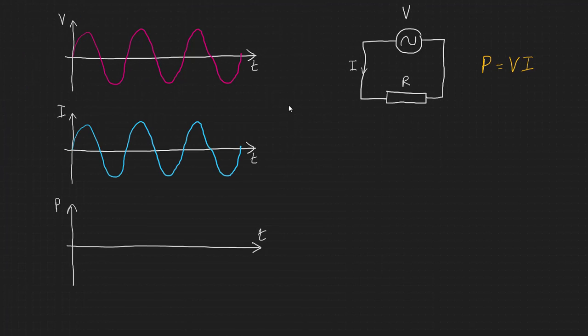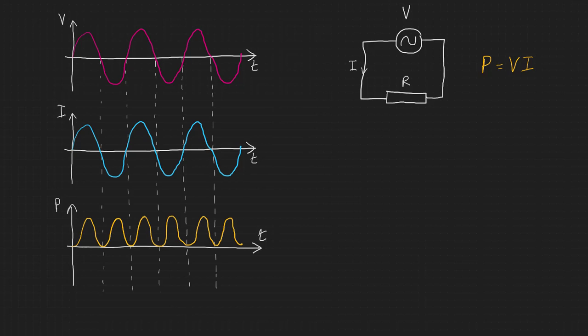If we multiply these two sine waves together for the voltage and the current, we get a waveform for the power like this. It has twice the frequency and is positive at all values. This makes sense because power can only be positive. There's no such thing as a negative power.